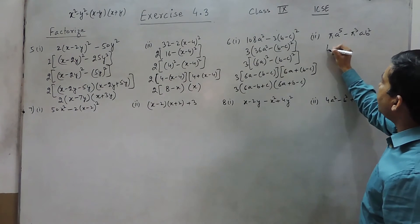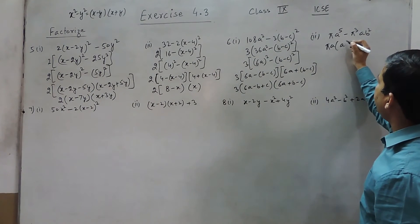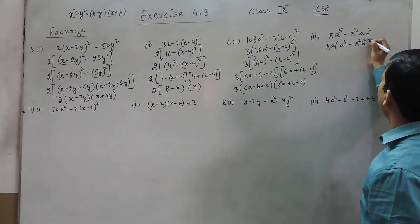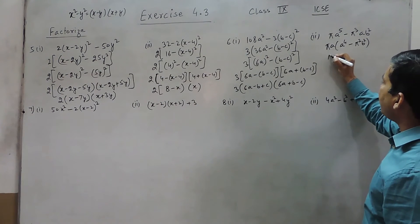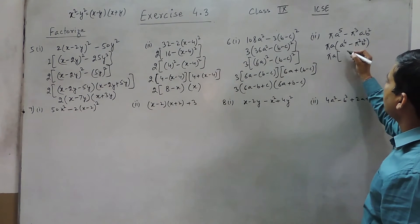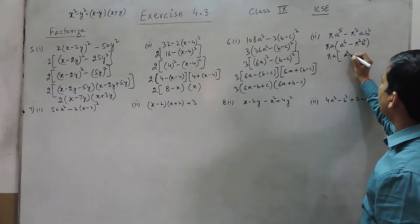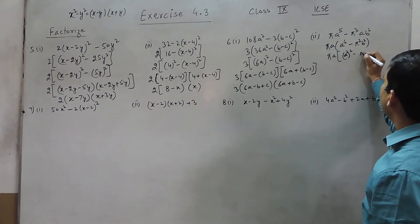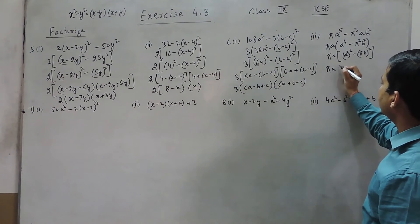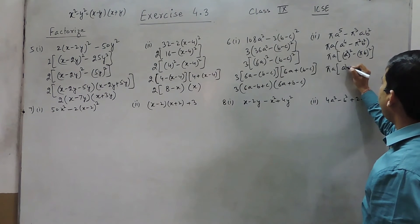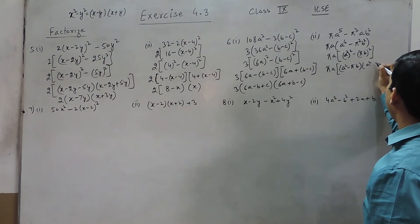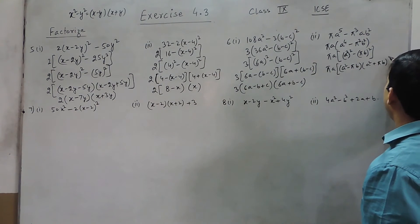Here we can take π and a as common, giving us a⁴ - π²b². This can be written with πa taken as the common term, so it becomes πa × [(a²)² - ...]. The two factors will be (a² - πb) as the first factor and (a² + πb) as the second factor.